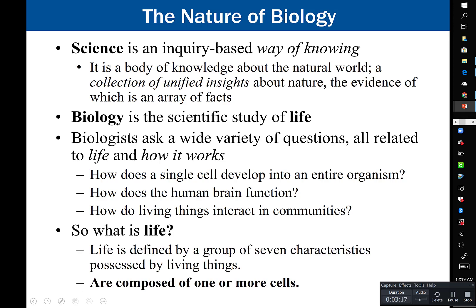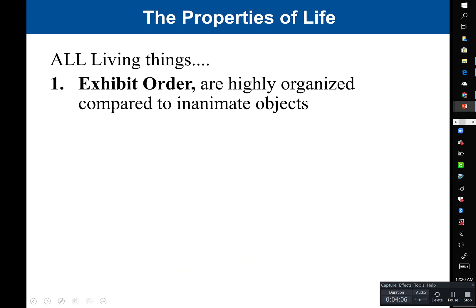We need to start by talking about what is life and how do we classify something as living. Life is defined by a group of seven characteristics possessed by living things. A key point is that living things are composed of one or more cells — the cell is the fundamental unit of life, the smallest part considered living. To classify something as living, there are seven characteristics.